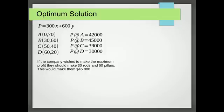We've got to give our answer in terms of the context of the question. So we say, if the company wishes to make a maximum profit, they should make 30 rods and 60 pillars. Now that's enough in terms of the way the question is worded. But it doesn't do any harm to say that this would make $45,000 profit. And that will actually be helpful in the excellence part of the problem.